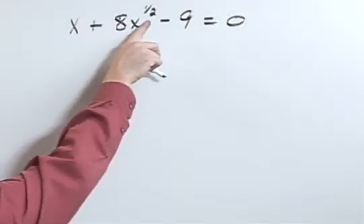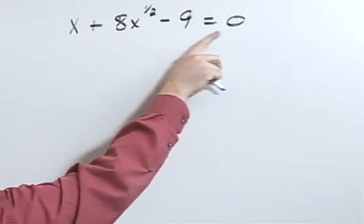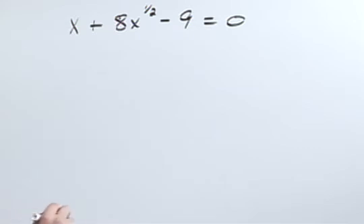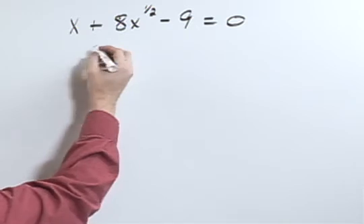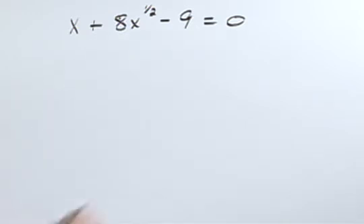x plus 8x to the 1 half power minus 9 equals 0. What I'd like to do is to rewrite this so that it's a quadratic. But in order to do that, I'm going to have to do a substitution.